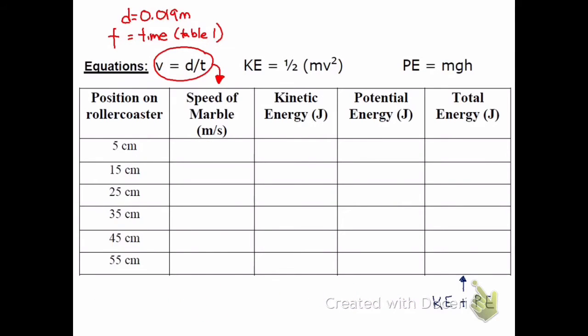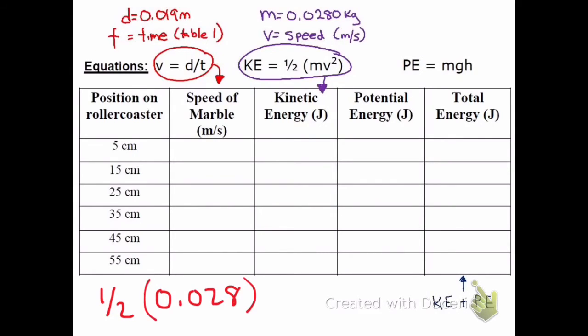The next thing we're going to calculate is the kinetic energy of the marble. Kinetic energy is 1/2 mv squared. So we're going to do 1/2 times 0.028, and then we're going to multiply it by the speed, which is this number here. And that is 0.380, which we just wrote down. Don't forget to square it. And that will give us kinetic energy of 0.00202 joules. So it's a very small amount of kinetic energy, which makes sense. It's moving very slowly at the beginning.